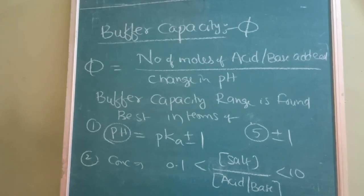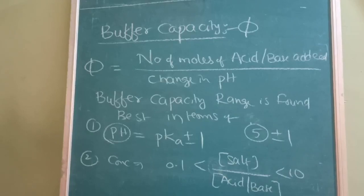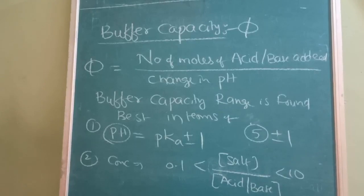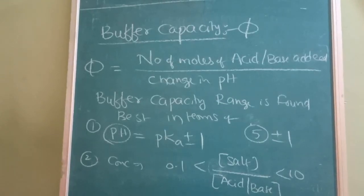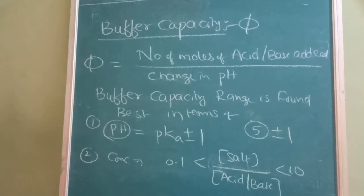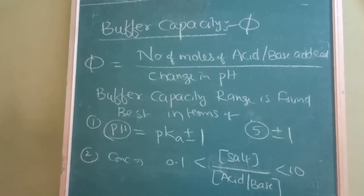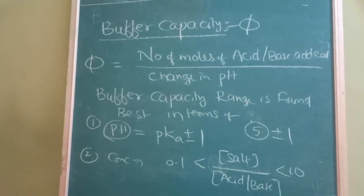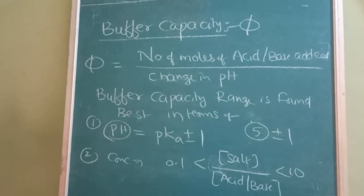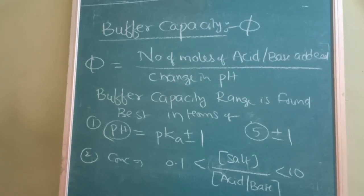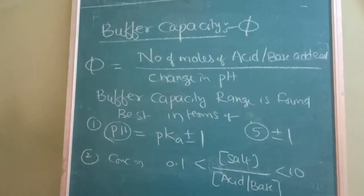When the salt/acid or salt/base ratio decreases below 0.1, buffer capacity is not maximum. When it increases above 10, buffer capacity is also not maximum. Buffer capacity is maximum when the available pH lies within ±1 of pKA, or the concentration ratio lies between 0.1 and 10.